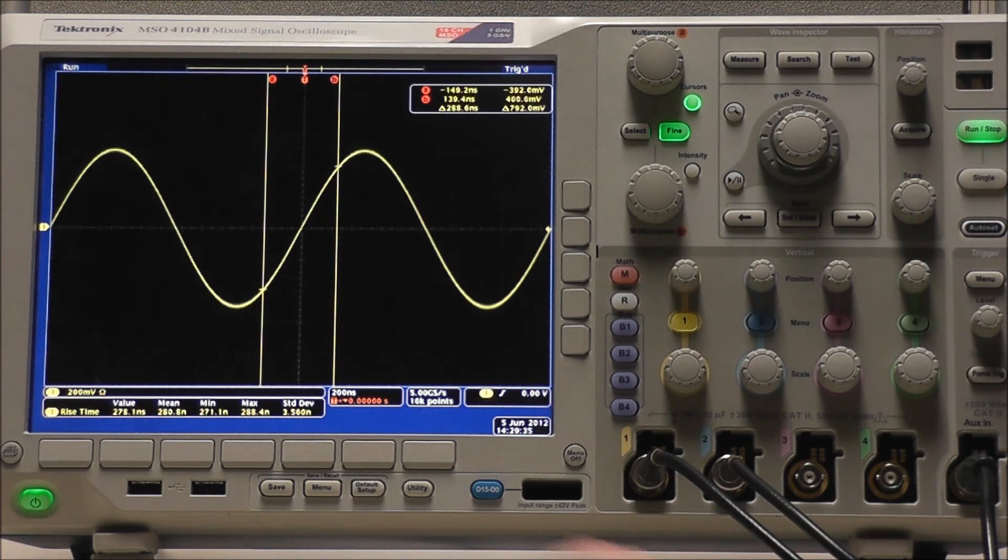However, our rise time measurement has a mean value of approximately 281 nanoseconds. Now, I don't know the number off the top of my head, but this yields an error of approximately 2 to 4%. And this may not be a critical issue depending on what you're doing and what you're looking for.